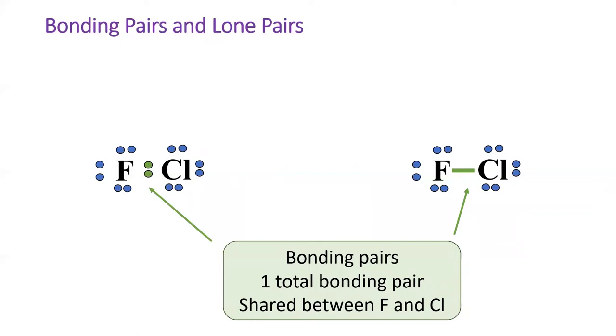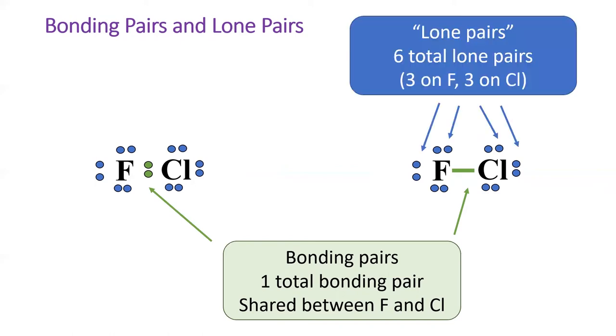We call these shared electrons the bonding pair. Covalent bonds are always formed by an even number of electrons. The non-bonding electrons are called lone pairs. They do not participate in the covalent bond. Each of these atoms has three lone pairs, as indicated by the blue dots.